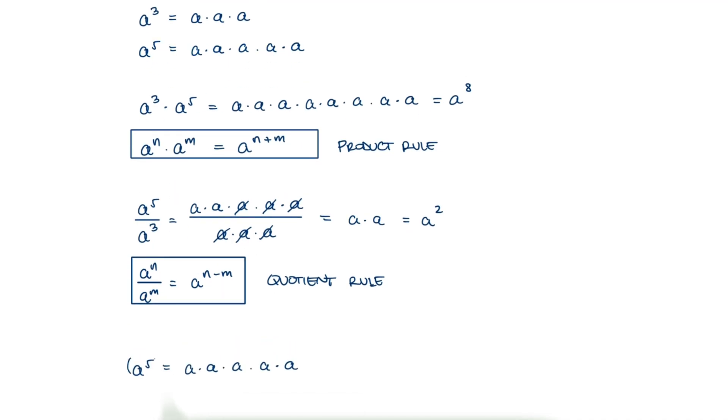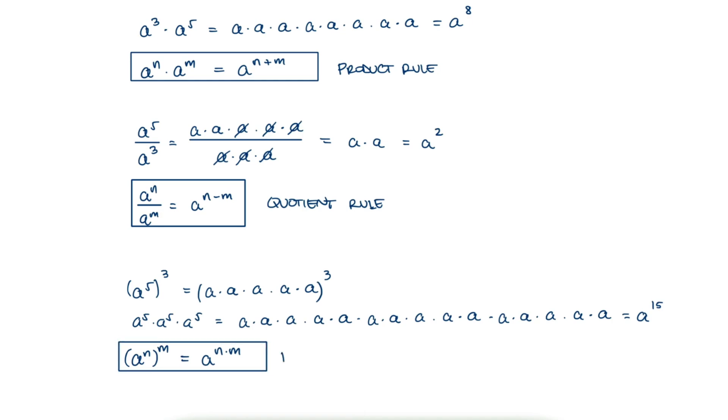Now, if a to the 5 is all to the power of 3, it would mean we have a multiplication of a to the 5 three times. If we expand this, we end up with fifteen a's. This is called the power rule.